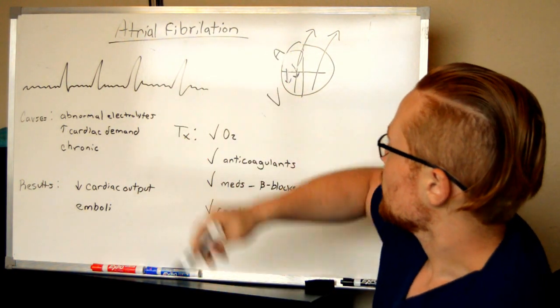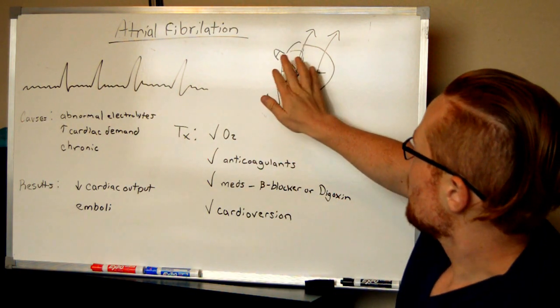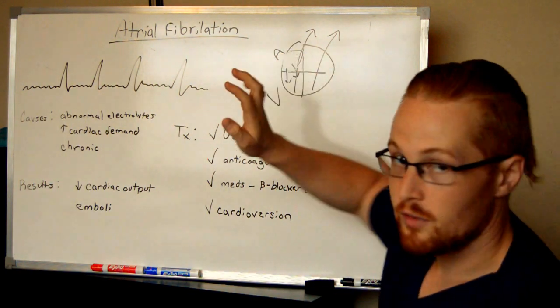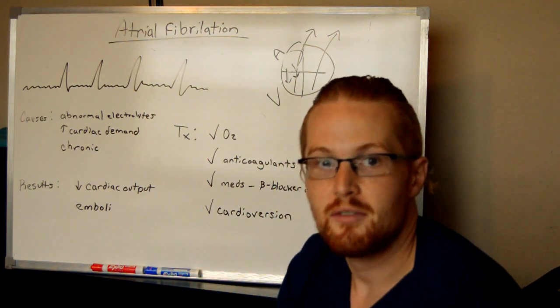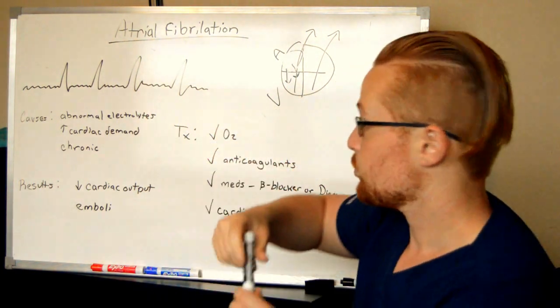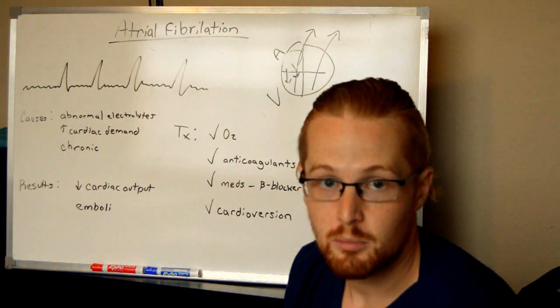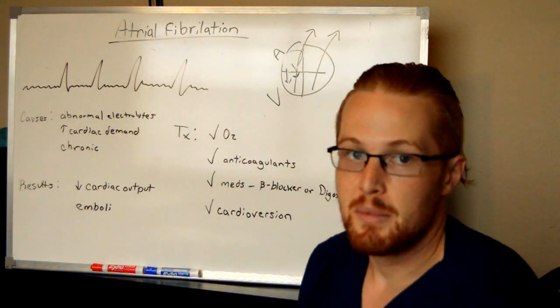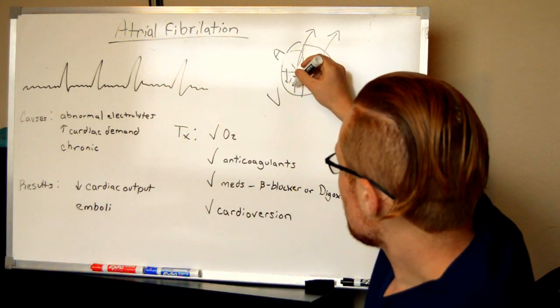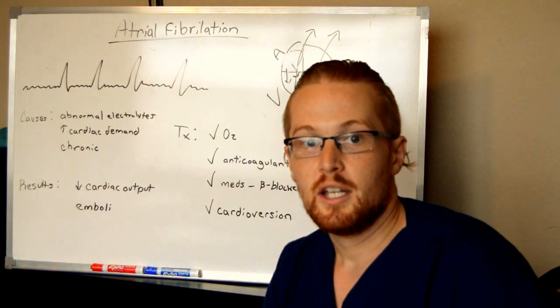Now, atrial fibrillation is when these atrium are now beating very fast, to the point where they may even not be - for starters, they're beating faster than the ventricles. And so that's a problem in that they may be beating and trying to push blood into the ventricle while the ventricle itself is trying to beat.